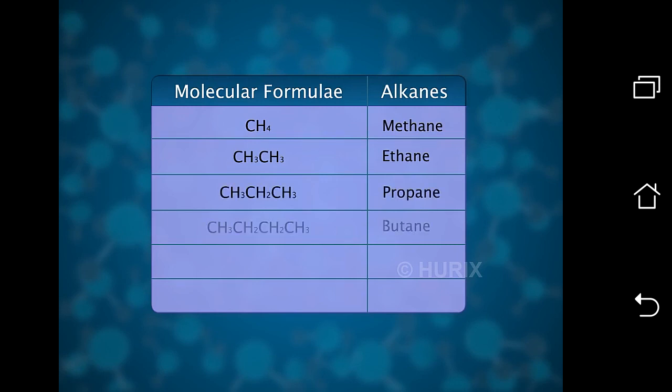Members of each group are similar in formula and properties. For example, the group of alkanes has methane, ethane, propane, butane, pentane, hexane, etc. as members.